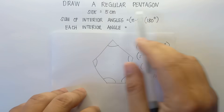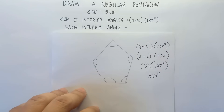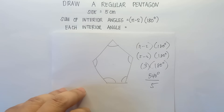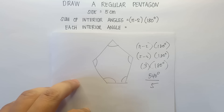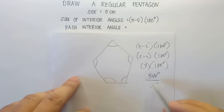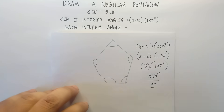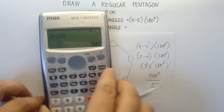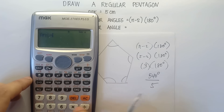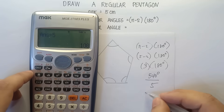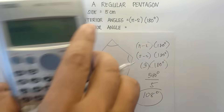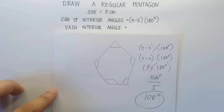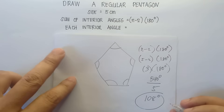Now since we need to draw a regular pentagon, we need to divide 540 by 5, so that the measure of each interior angle is equal. So 540 degrees divided by 5 — the answer is 108 degrees. Therefore, each interior angle has a measure of 108 degrees.